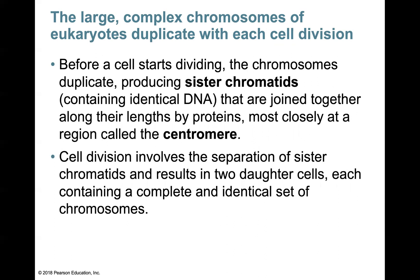Before a cell starts dividing, the chromosomes duplicate, producing sister chromatids. These sister chromatids contain identical DNA and are joined together along their lengths by proteins, most closely at the region in the center called the centromere. During cell division, the separation of these sister chromatids results in two new daughter cells being created, each containing a complete and identical set of chromosomes.